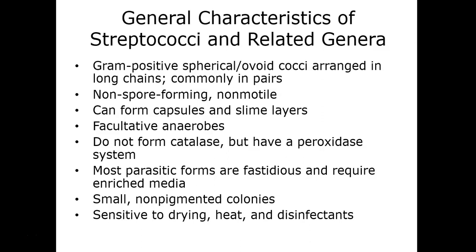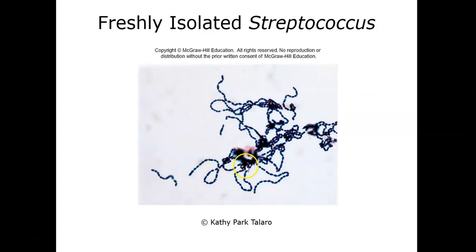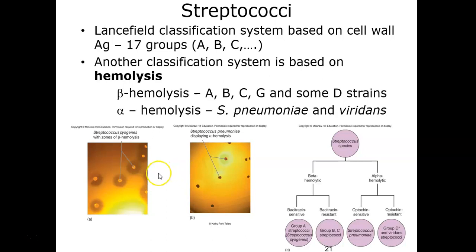Here are chains of cocci — very different looking from the staph, still gram-positive and staining purple. A scientist named Rebecca Lancefield developed a grouping system that identifies the carbohydrates of streptococci. This is the primary way we classify streptococci into a 17-group system. We can also classify them based on their level of hemolysis — the breakdown of red blood cells.